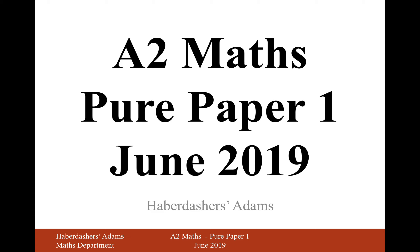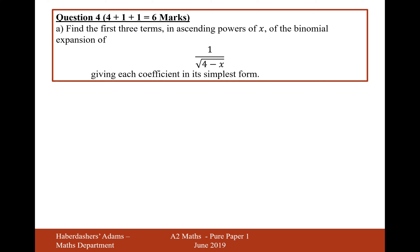Hello there and welcome to June 2019 A2 Maths Paper 1, question 4. We need to find the first three terms in ascending powers of x of the binomial expansion of 1 over the square root of (4 minus x), giving the coefficients in simplest form.